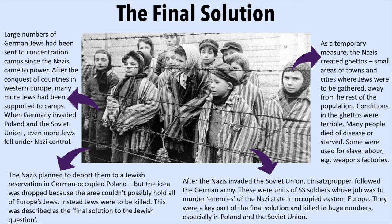After the Nazis invaded the Soviet Union, Einsatzgruppen followed the German army. They were units of SS soldiers whose job was to murder enemies of the Nazi state in occupied Eastern Europe. They were a key part of the Final Solution, killing huge numbers, especially in Poland and the Soviet Union.